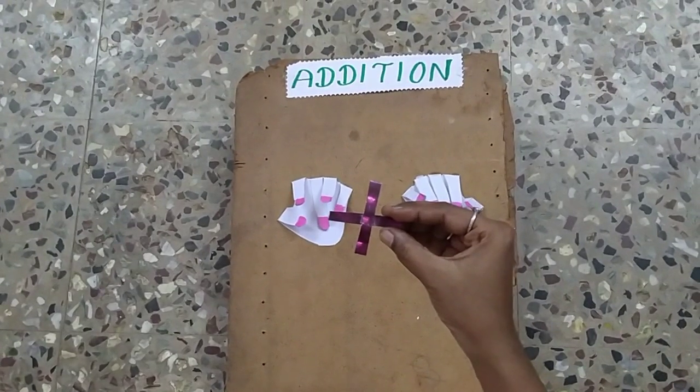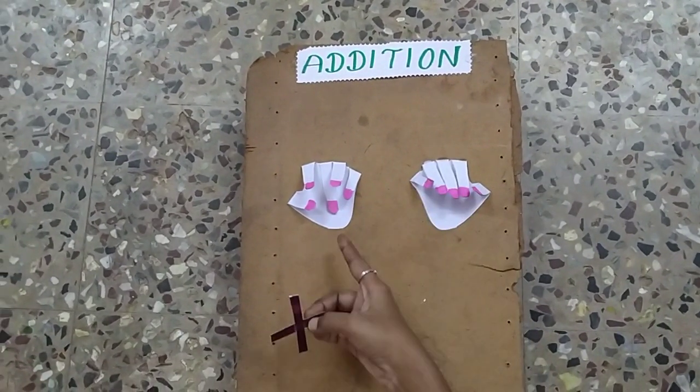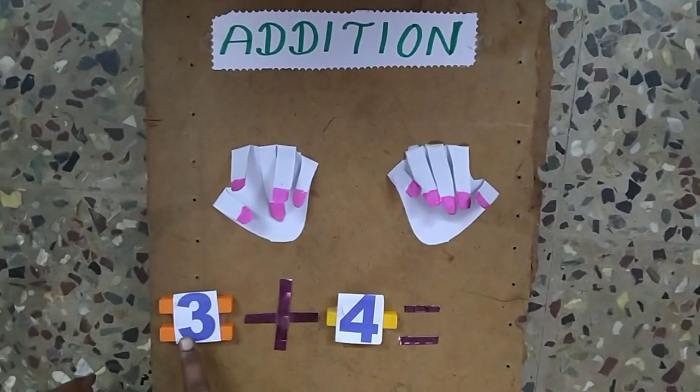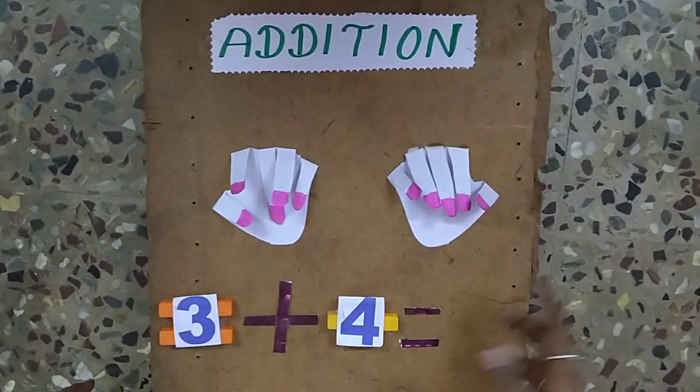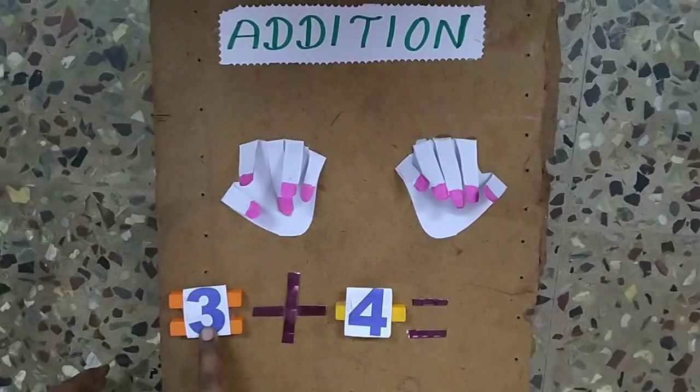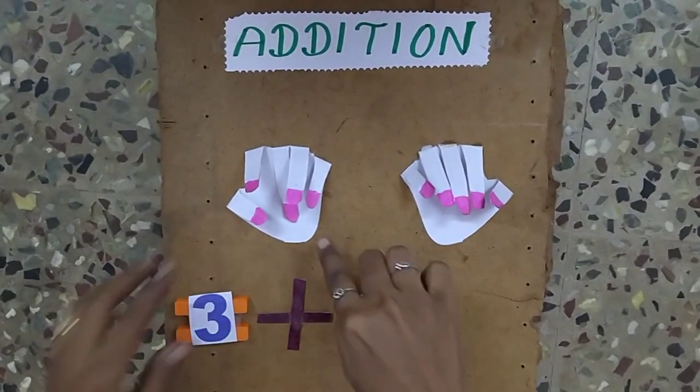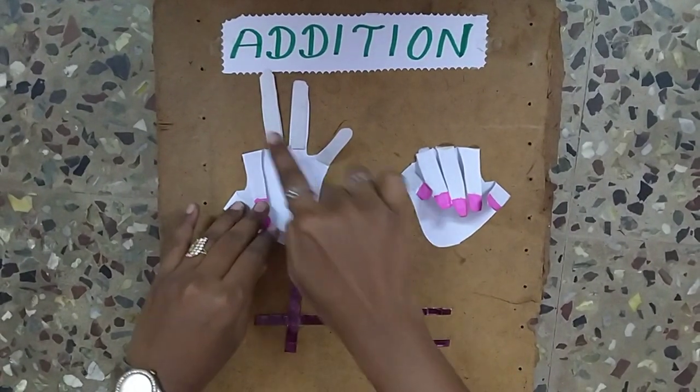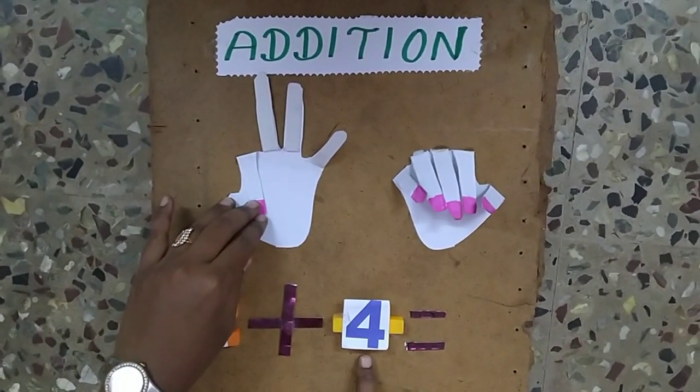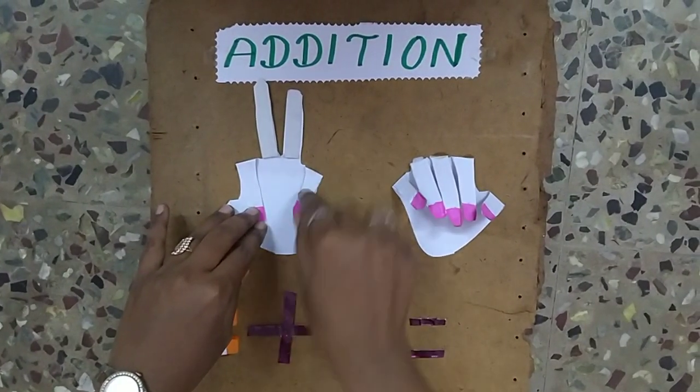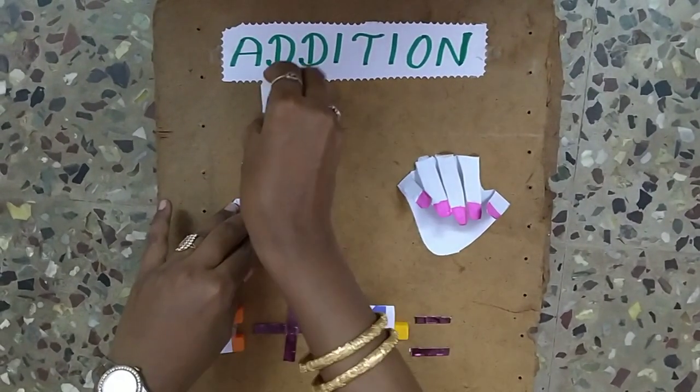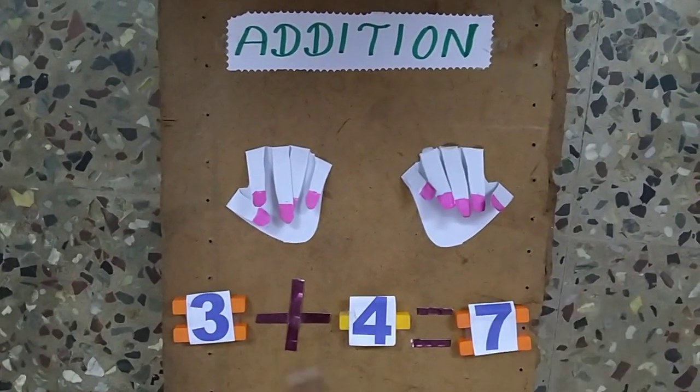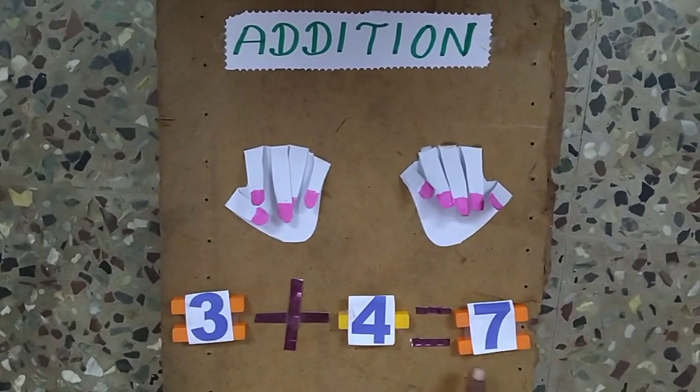Now we are going to learn addition by using fingers. First question is 3 plus 4 equals what? First number is 3, so I take 3 fingers: 1, 2, 3. Plus 4, so I continue counting: 4, 5, 6, 7. So the answer is 7. 3 plus 4 equals 7.